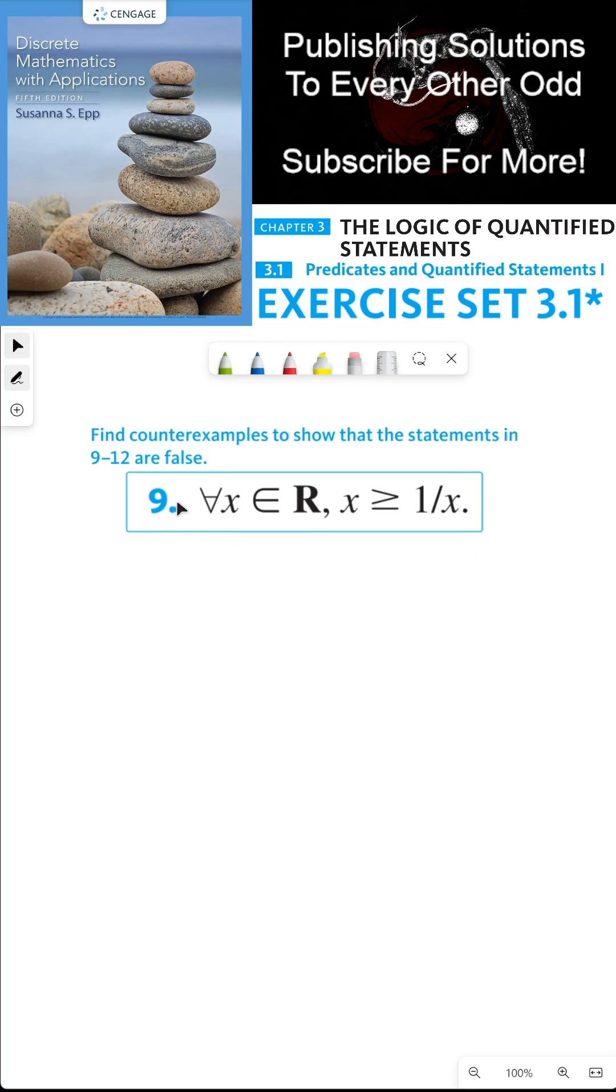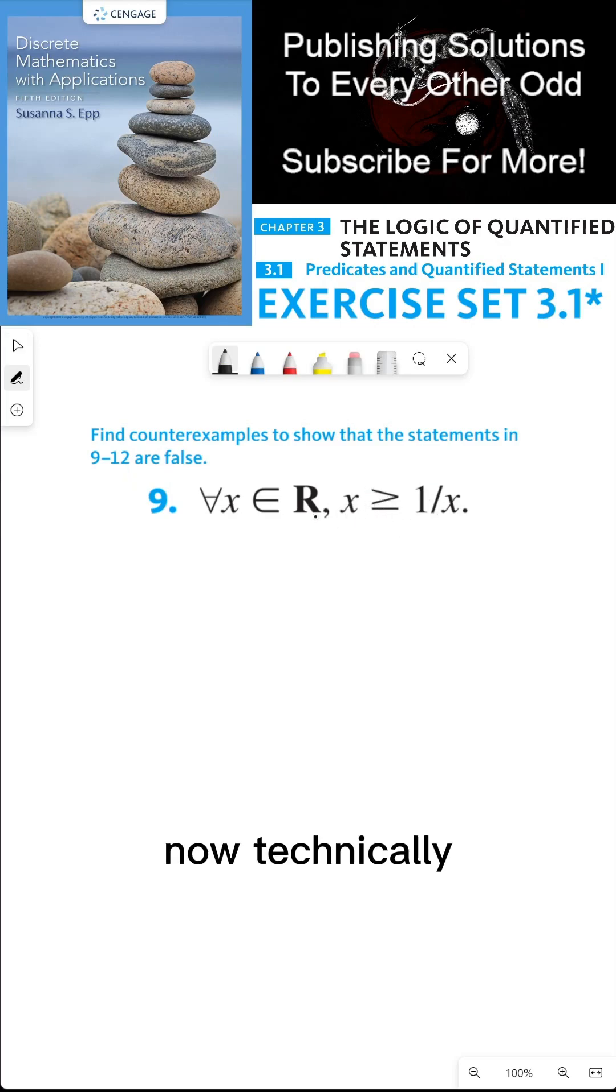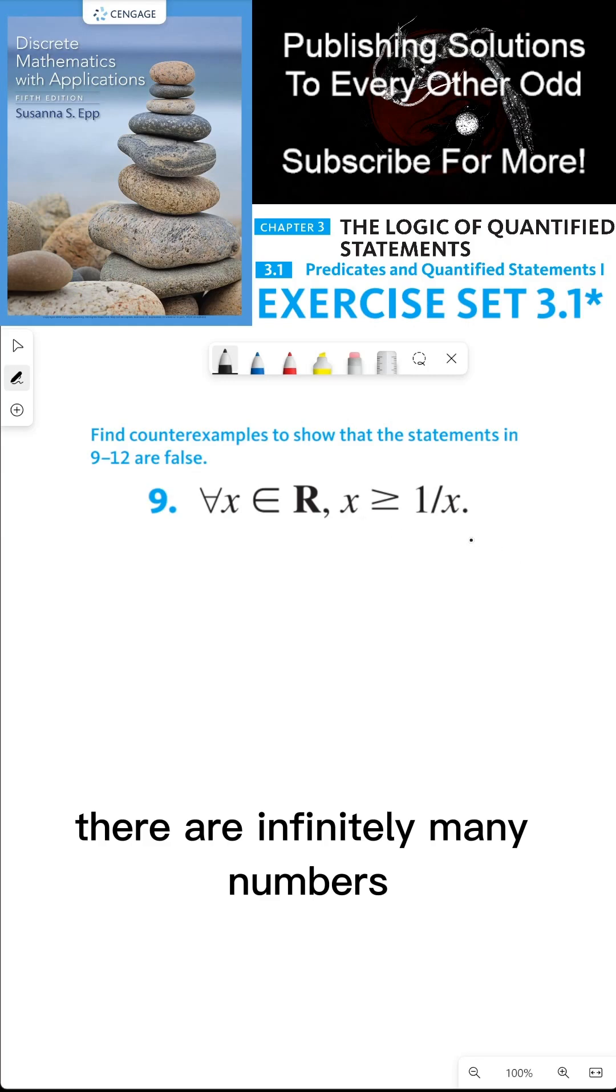All you need is just one real number where this inequality is false. Now, technically there are infinitely many numbers that you can pick to show that this is false, but you just have to find one of them.